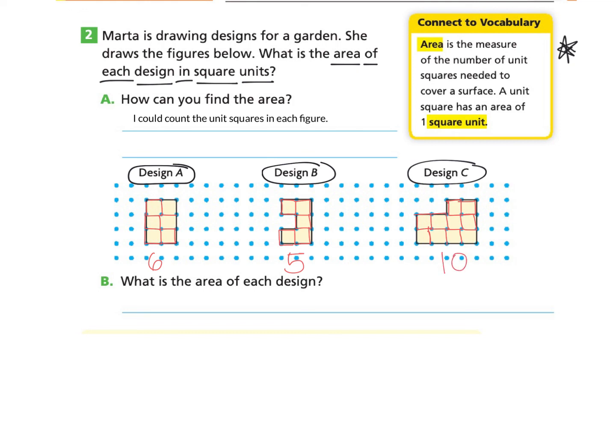Question B says: what is the area of each design? Meaning, what is the number of unit squares needed to cover the surface? We can go back and write in what we found. Design A had six square units, design B had five square units, and design C had ten square units. Remember, when we are writing the area, we need to make sure we don't just write the number, but notice that we're writing square units next to the answer. If you would like to go back and rewatch this video, please do so. And know that you can pause it any time.